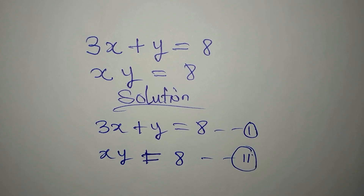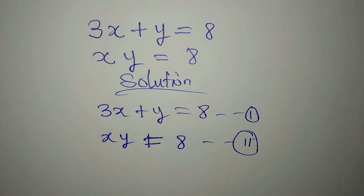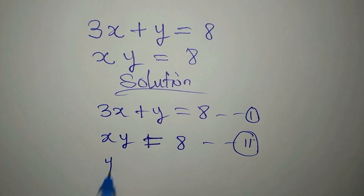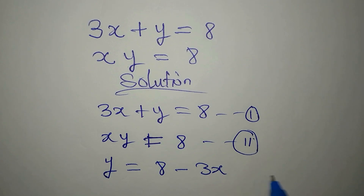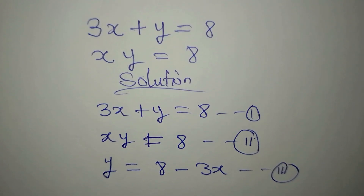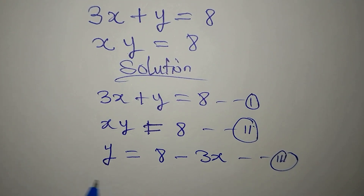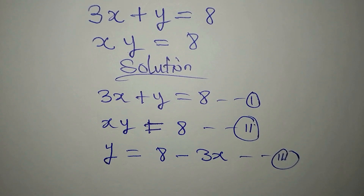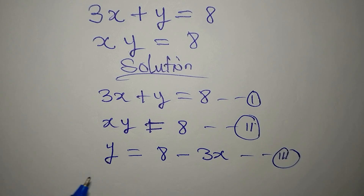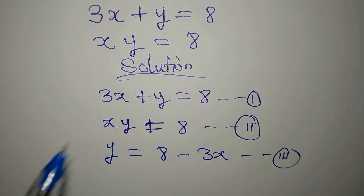From equation 1, I can make y the subject, so that y will now be 8 minus 3x. This is now equation 3, so that every time we get the value of x, we can come back here and get the value of y. Equation 3 was derived from equation 1.